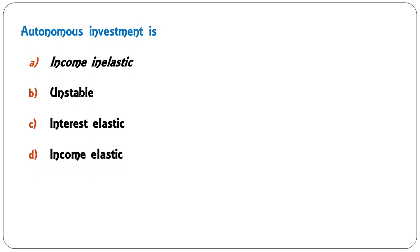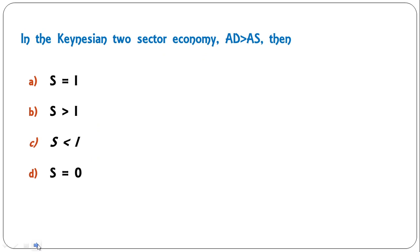Next question: autonomous investment is income inelastic, stable, interest elastic, or income elastic? The correct answer is income inelastic — autonomous investment does not depend on income. So A is the correct answer.